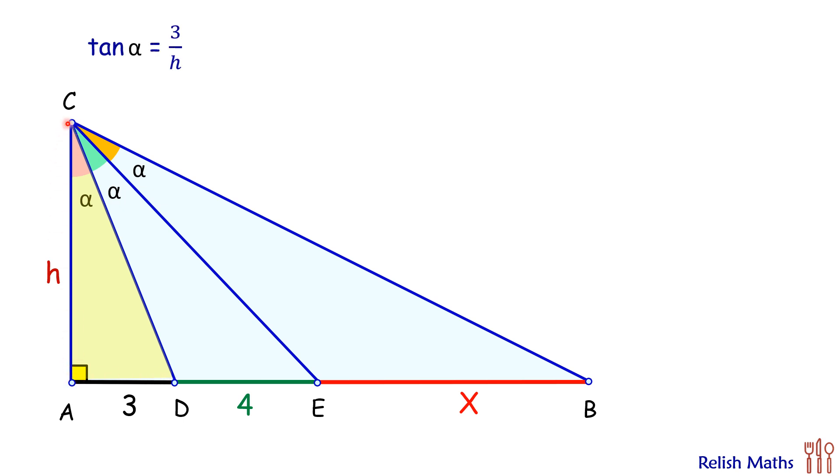Same way, if we look at the triangle CEA, in this triangle we can say that tan of 2α is 7 upon h. And same way we can say for triangle CBA, the full triangle, so here we can say tan of 3α is 3 plus 4 plus x upon h.